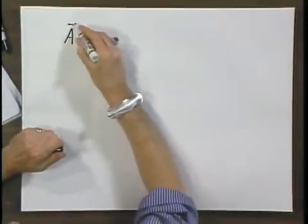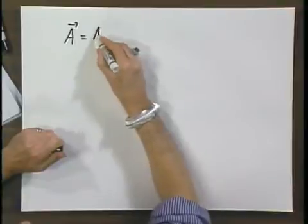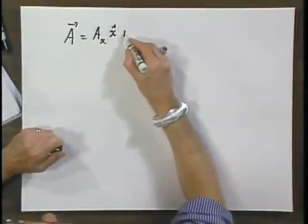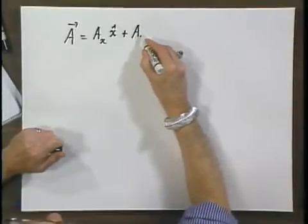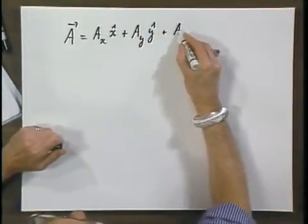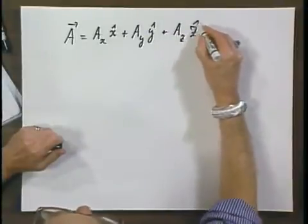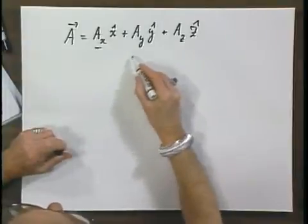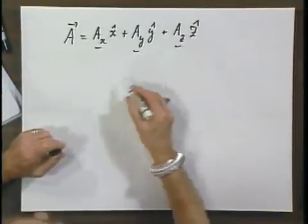Let A be a vector with x component A of x, x roof, A of y, y roof, plus A of z, z roof. So these are the x component of the vector, the y component and the z component of the vector.